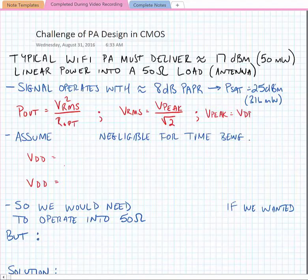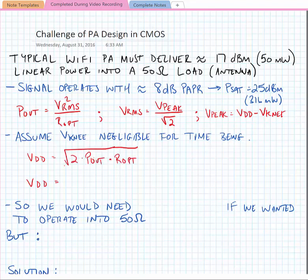We're going to assume the peak voltage swing equals VDD minus VKnee. For simplicity, we're assuming VKnee is negligible for the time being. So we can now make some substitutions and find what VDD would need to be in order to achieve this output power into 50 ohms. We find that VDD equals the square root of two times the output power times the optimum resistance.